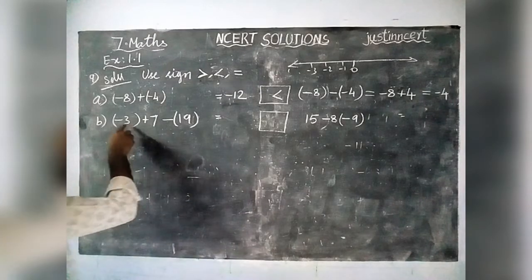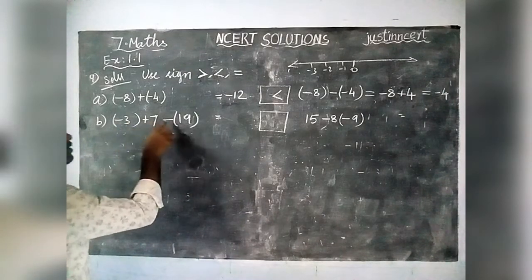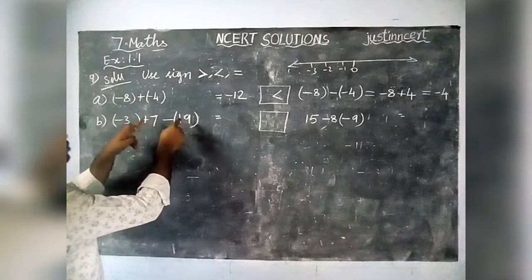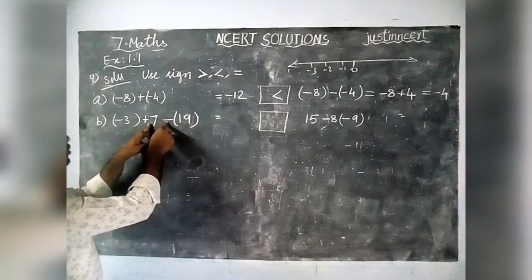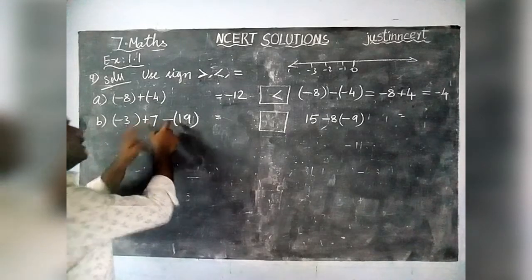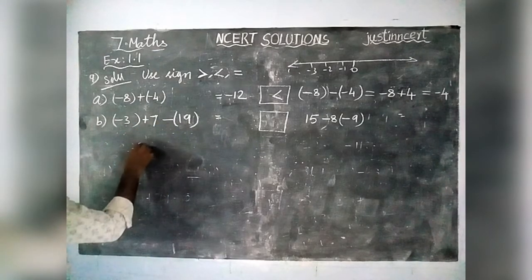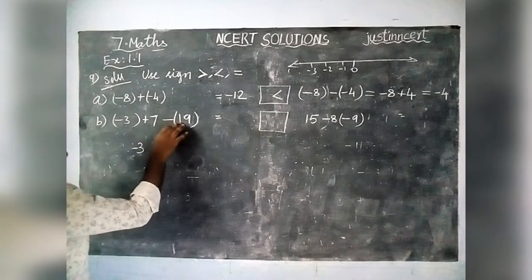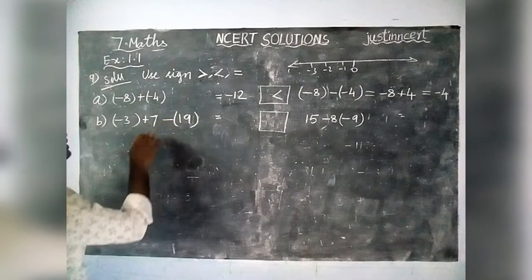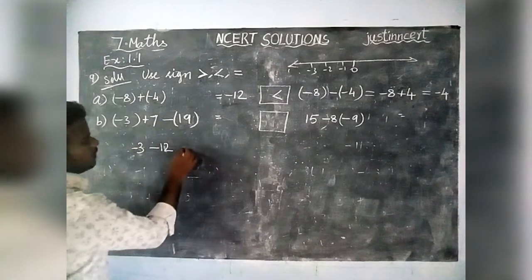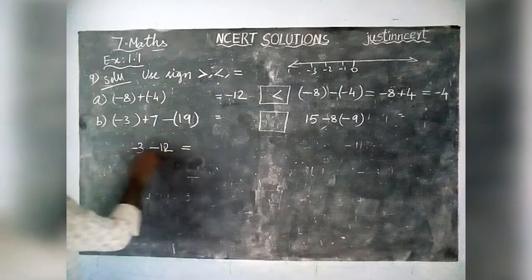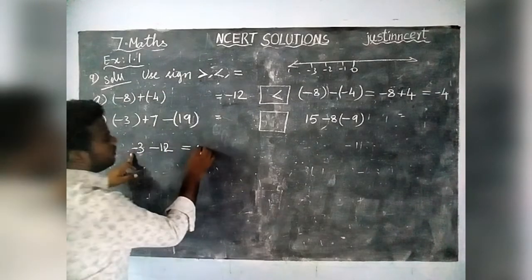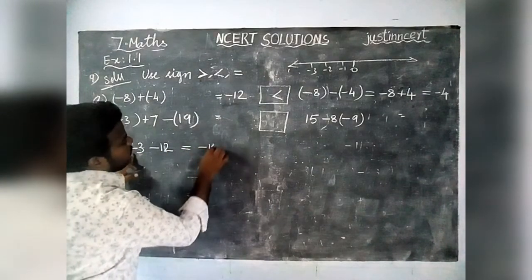Next one: -3 + 7 - 19. The two numbers 7 and 19 are positive numbers but there is a minus symbol between them. So first we check: minus 3 plus 7, minus 19. The difference between 7 and 19 is 12. Now both remaining numbers have the same sign: minus 3 and minus 12. So the answer is minus 15.